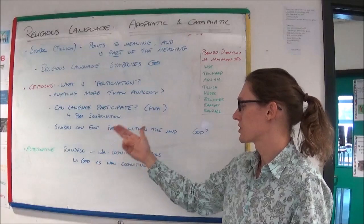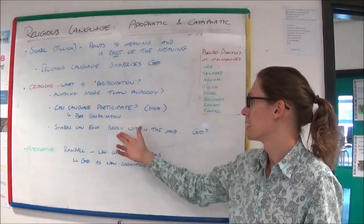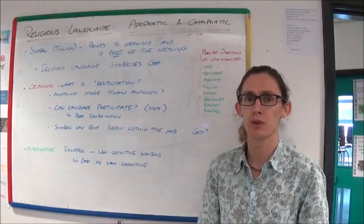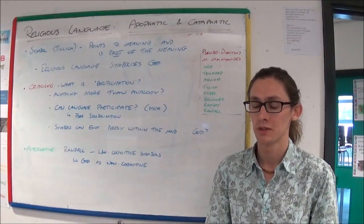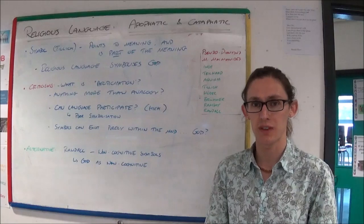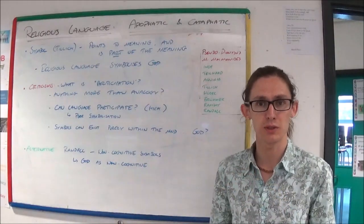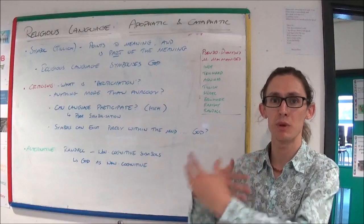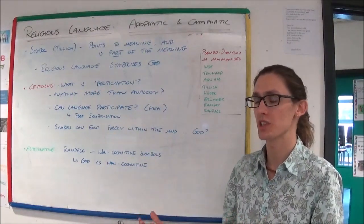But a big criticism, possibly the strongest criticism in my view, is that symbols can exist purely in the mind. A good example of this is the Confederate United States flag. There was never a Confederacy. It was an ideal. It was something people wanted to happen, but it never existed.